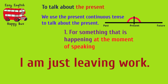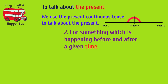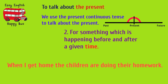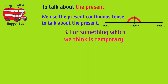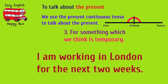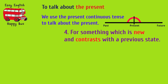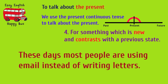For example: 'I am just leaving work.' For something which is happening before and after a given time: 'When I get home the children are doing their homework.' For something which we think is temporary: 'I am working in London for the next two weeks.' For something which is new and contrasts with a previous state: 'These days most people are using email instead of writing letters.'